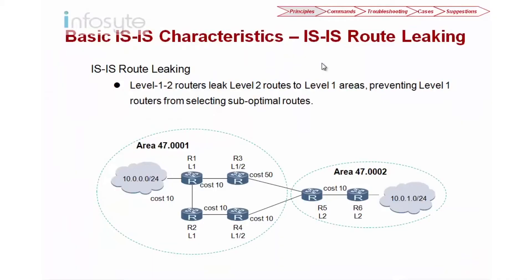Let us examine what we call route leaking in ISIS. In this example I have two areas: 47001 and 47002. In R3 and R4 we have both L1 and L2 routers. Inside here I have R1 running on Level 1 and R2 running on Level 1.